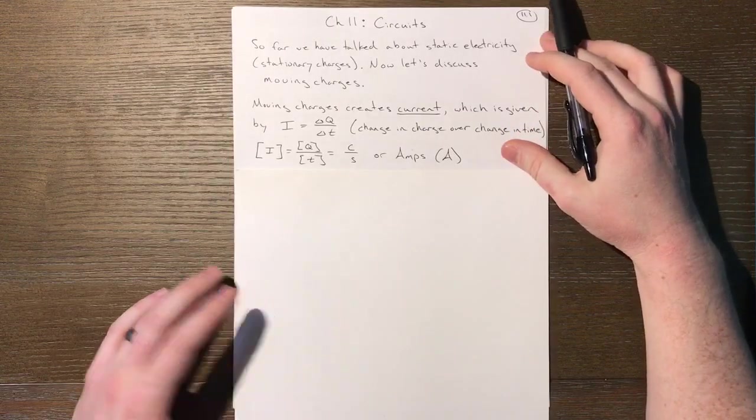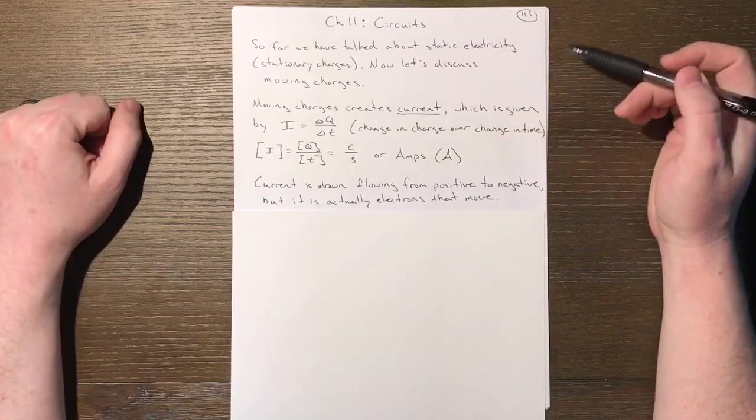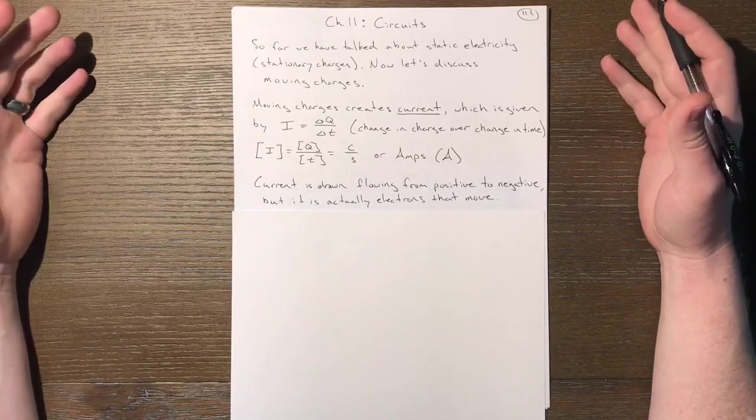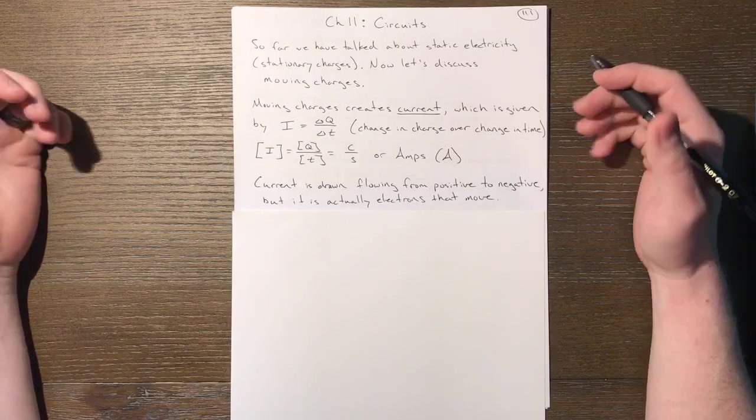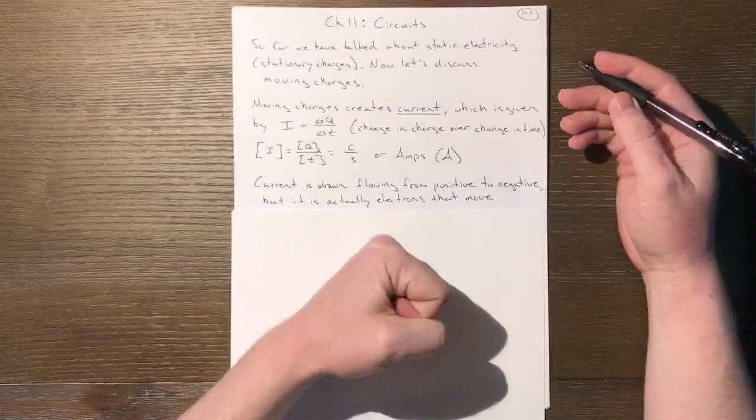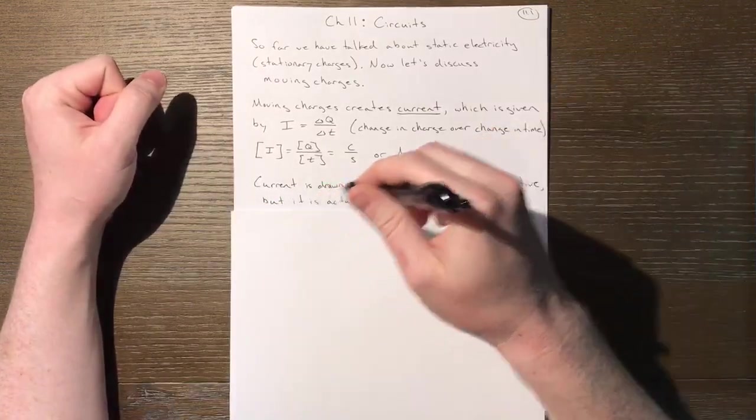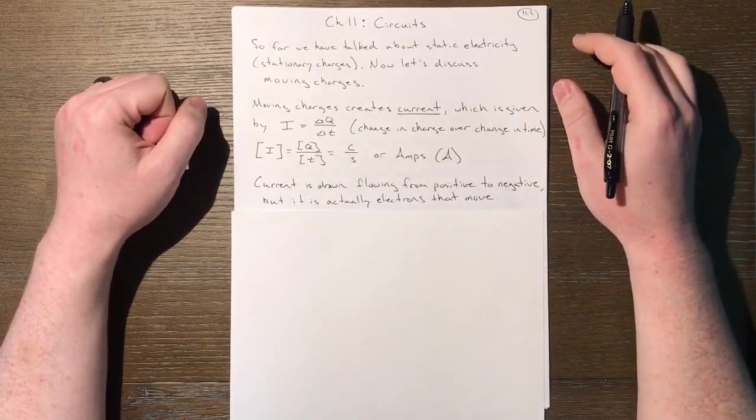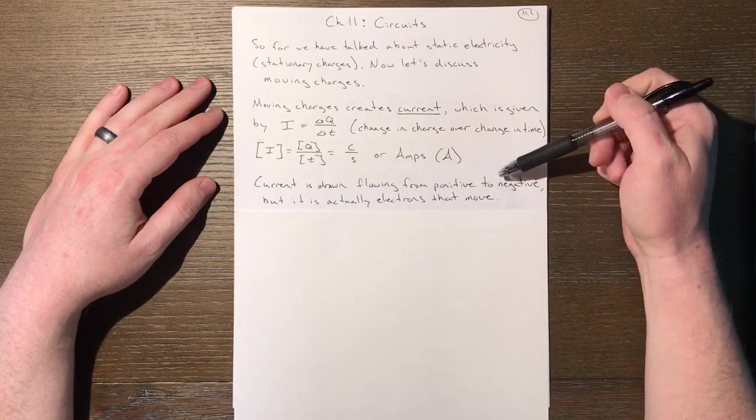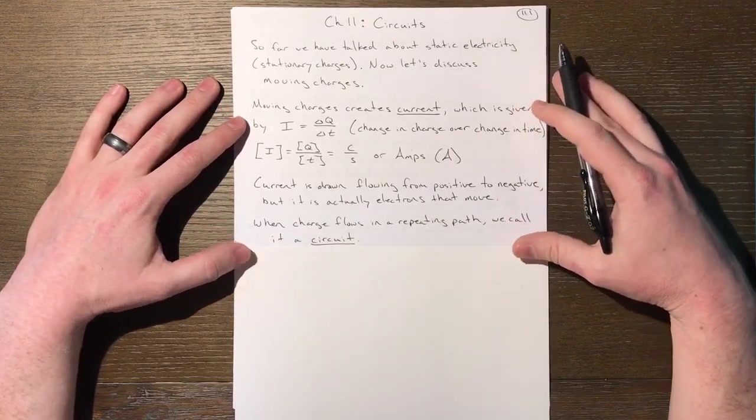Current is drawn flowing from positive to negative, however that's not really the way things work. That's a convention from before this was well understood. We now know it's actually electrons that move. Protons are stuck in the center of atoms, electrons can move and hop from atom to atom, causing a flow of charge.